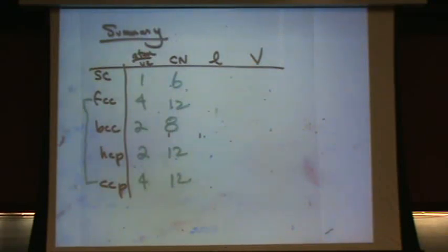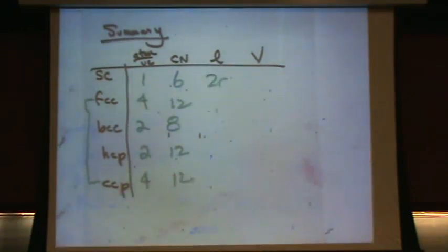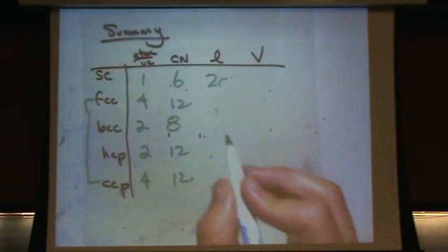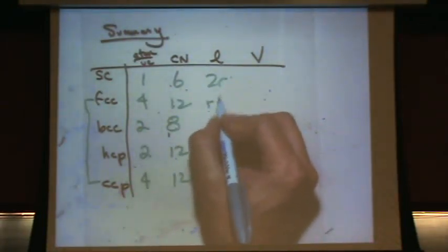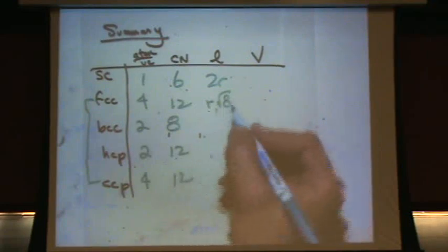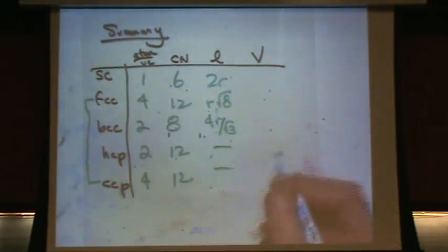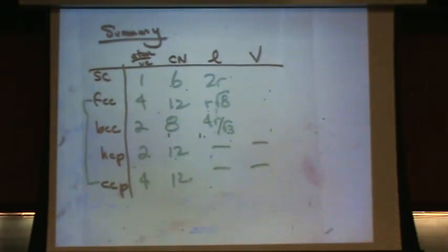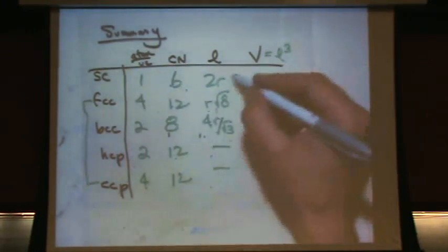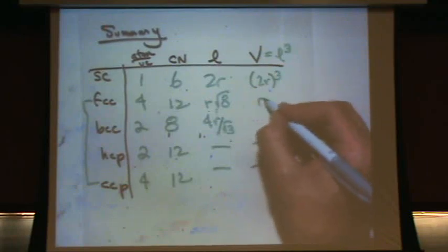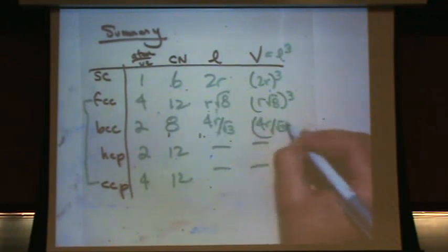Now let's do length — I'm just going to give you the summary. You have to derive them yourself if you want to know where they come from. SC is 2R, FCC is R√8, and BCC is 4R/√3. We don't usually do BCC unless your instructor is really cruel. Volume is length cubed, so it's 2R cubed, R√8 cubed, and (4R/√3) cubed.